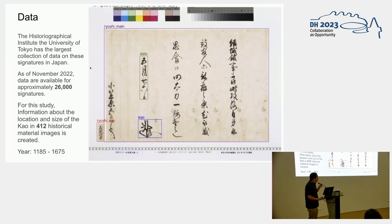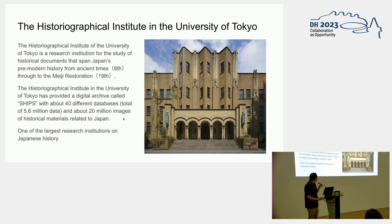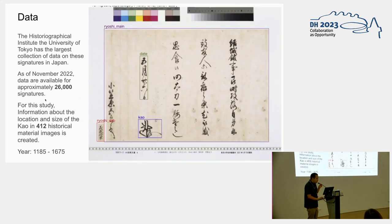In this study we use data from the Historiographical Institute of the University of Tokyo, which is the institute I belong to. This institute is a research institute for Japanese history, covering from the 8th century onward. We have many databases and publish many digital image repositories for Japanese history. It is one of the largest research institutes for Japanese history in Japan, and it has published many stylized signatures.